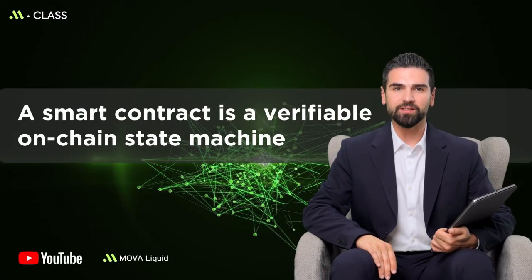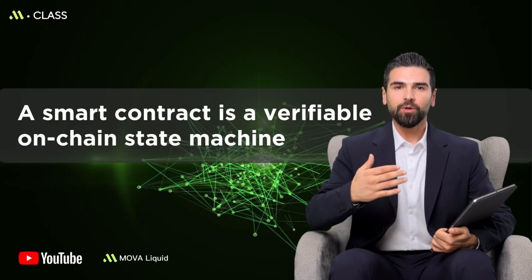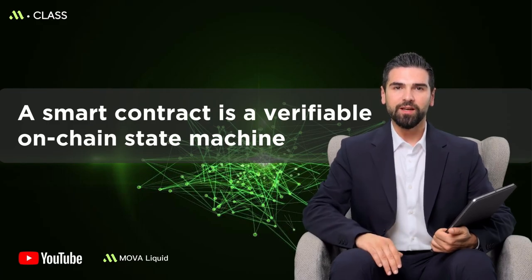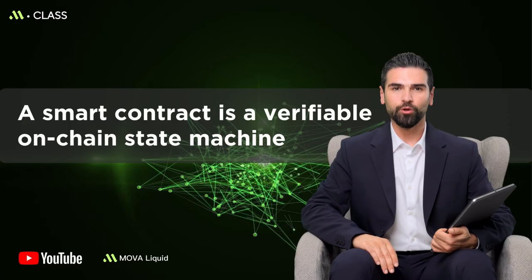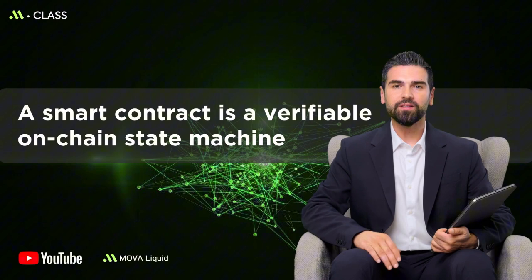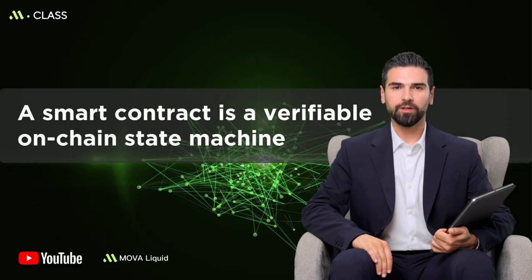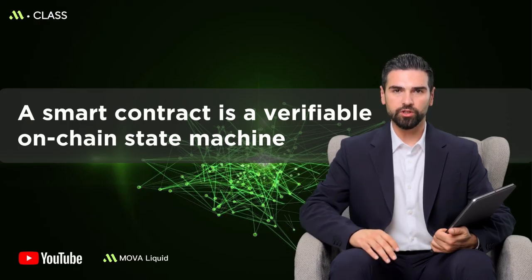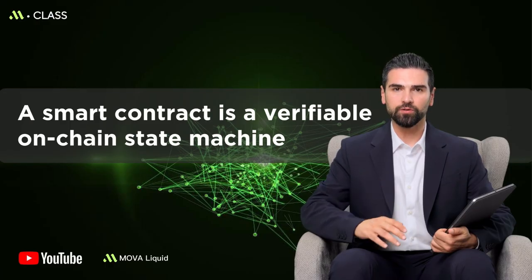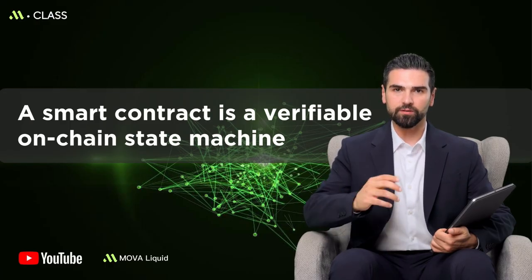A verifiable on-chain state machine means every state change is traceable. ABI exposes interfaces means that anyone following the same standard can interact with the contract, enabling openness and composability. Executed by consensus guarantees that different nodes executing the same code produce identical results. Strict security boundaries reminds us that decentralization does not mean no risk — permissions, upgradability, and external calls are common danger zones. Master these four layers, and you've captured the engineering essence of smart contracts.